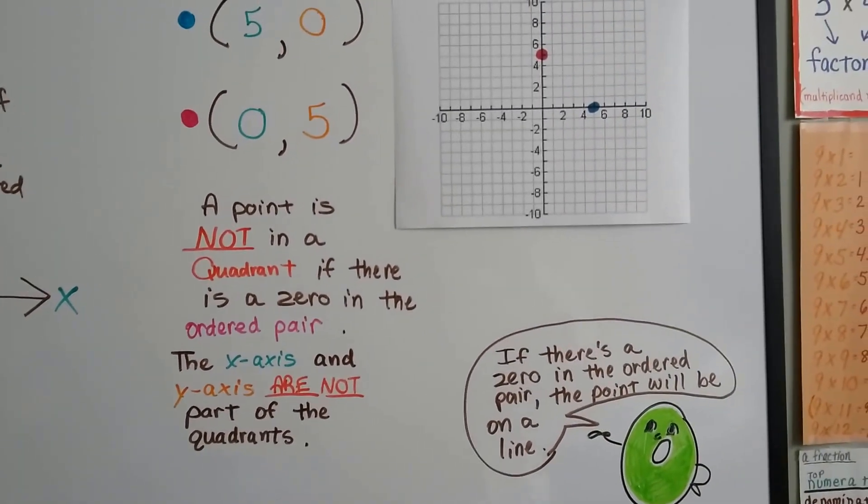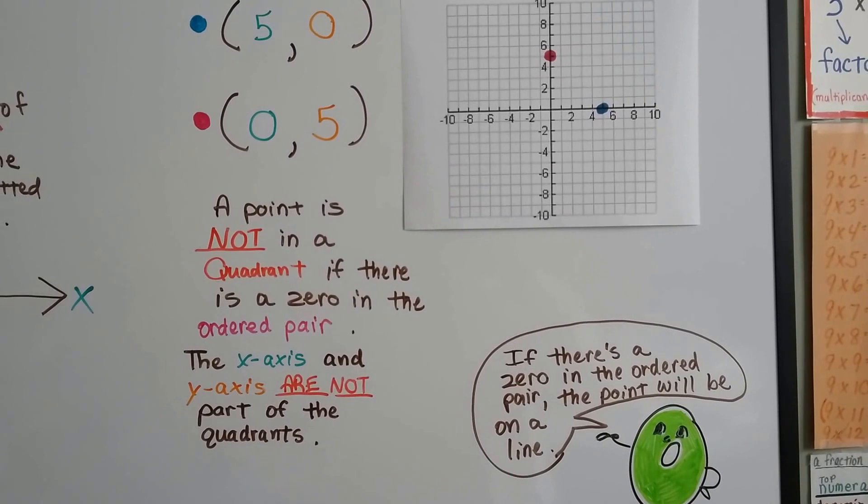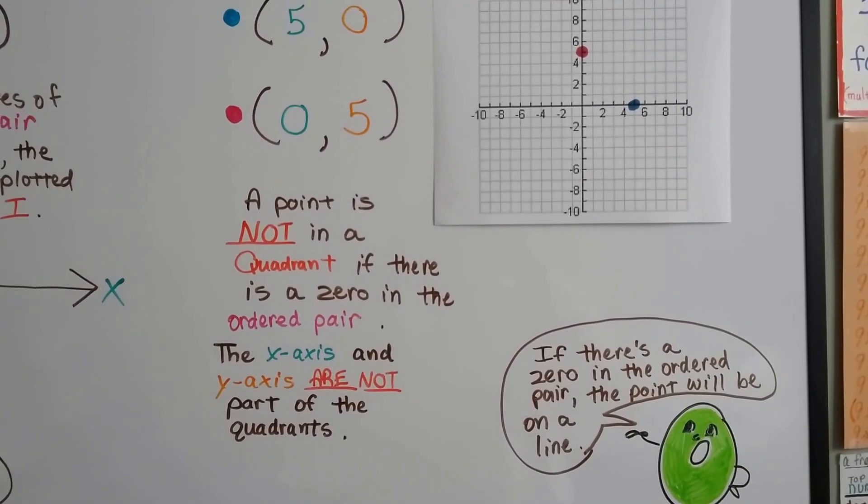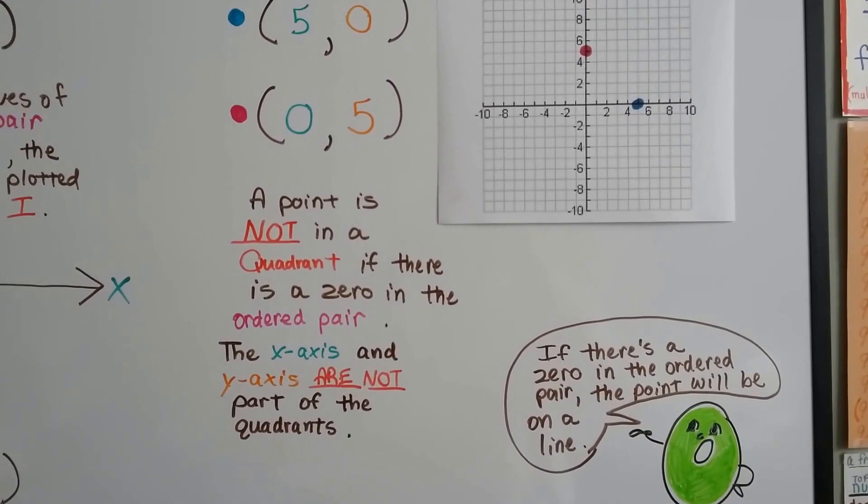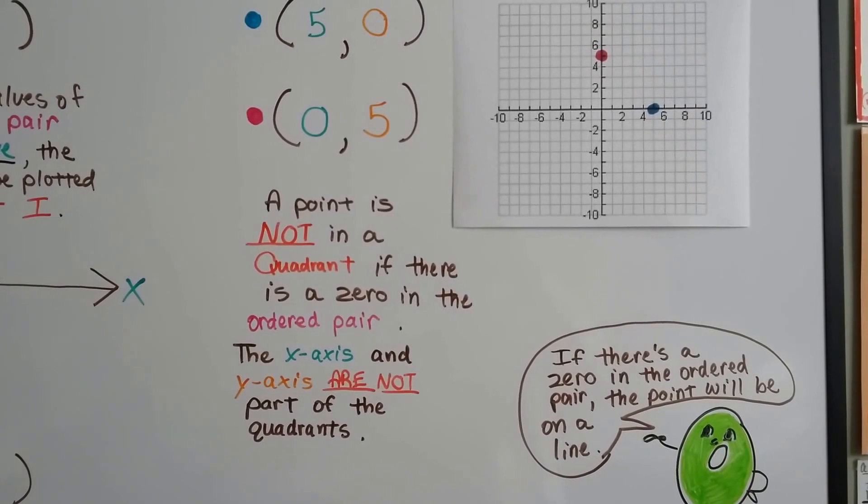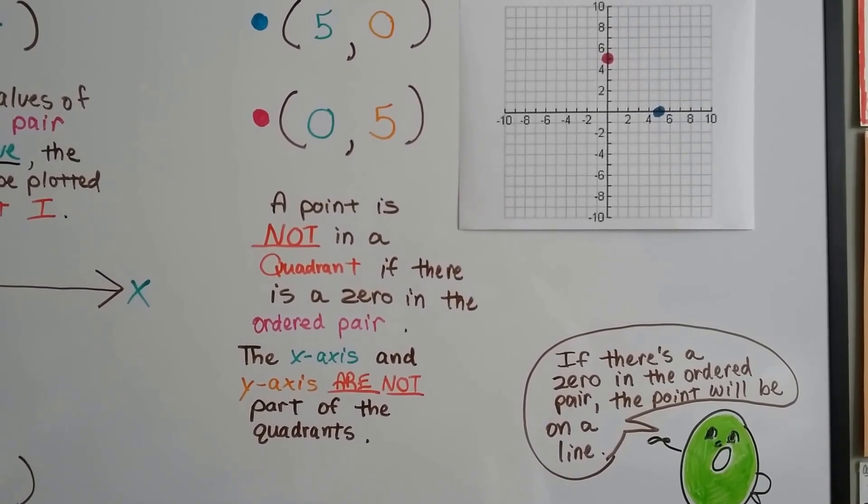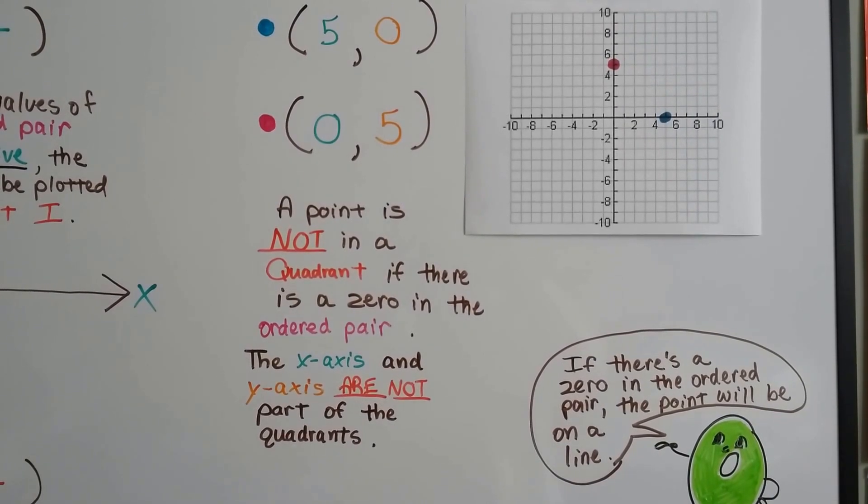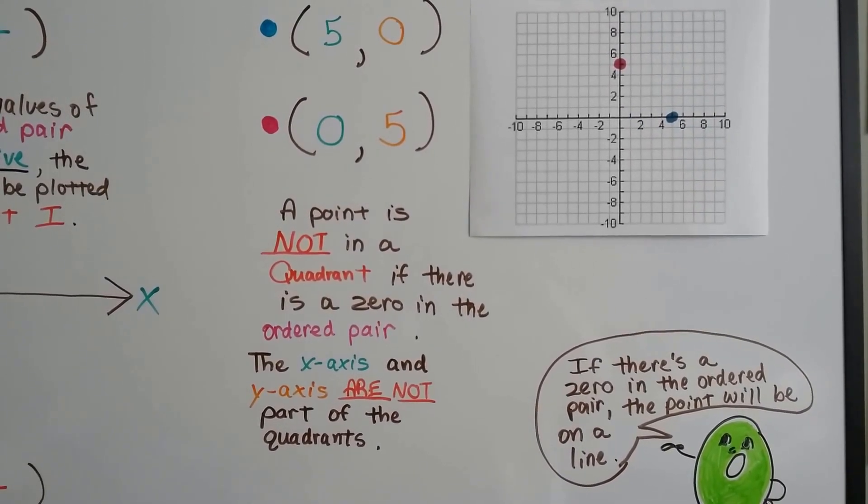And a point is not in a quadrant if there's a zero in the ordered pair. The x-axis and y-axis are not part of the quadrants. If there's a zero in the ordered pair, the point will be on a line. Okay? So don't let anything trick you on a test or something if it says for five comma zero for x and y, which quadrant is it in? The answer is none. Okay?